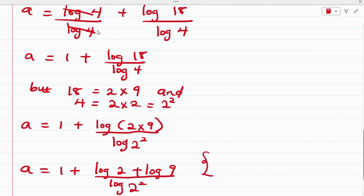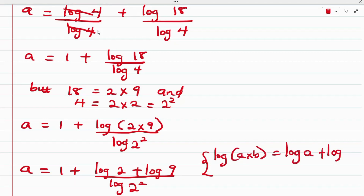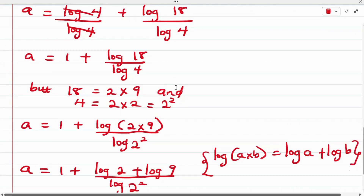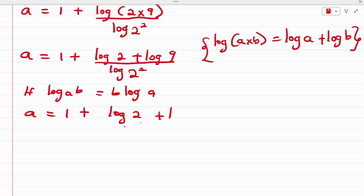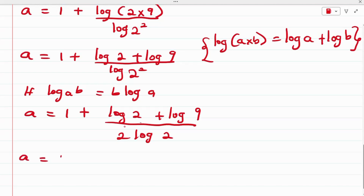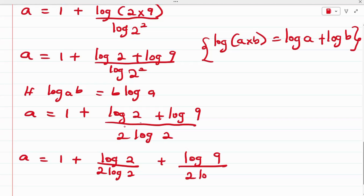This comes from the property log(A × B) = log A + log B. From the logarithmic property, log A^B equals B log A. Applying this to the denominator, we have A equals 1 plus (log 2 + log 9) all over 2 log 2. Separating this, A equals 1 plus log 2 over 2 log 2 plus log 9 over 2 log 2.